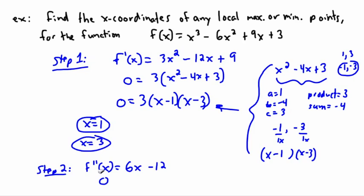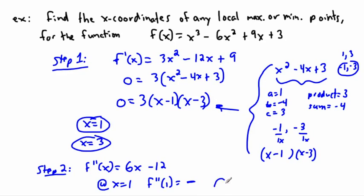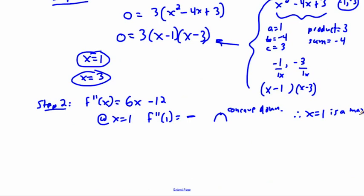Now I check what happens at x = 1. f double-prime of 1 = 6(1) − 12 = 6 − 12, which is a negative value. That means it's concave down — and if it's concave down, then x = 1 is a maximum.